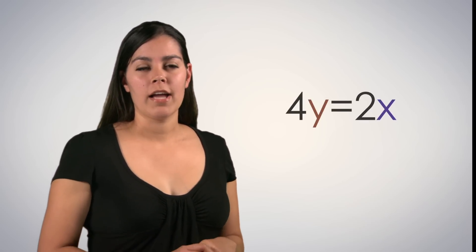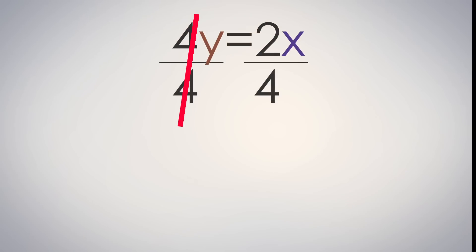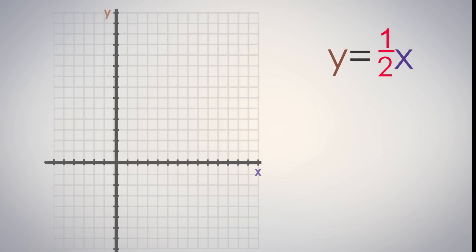Let's do one more. How about 4y equals 2x? Let's divide by 4 on both sides. We'll end with y equals 2 fourths x, or y equals 1 half x. Here the slope is 1 half. And notice there is no y-intercept. That means it is 0.